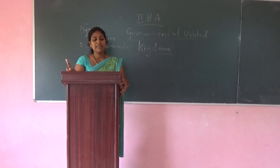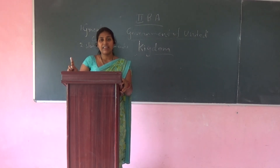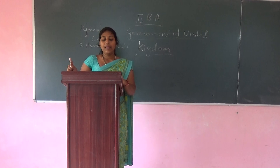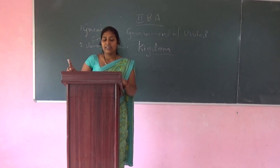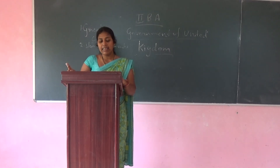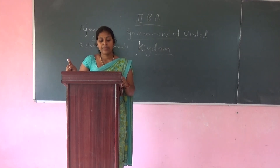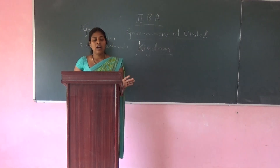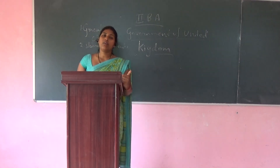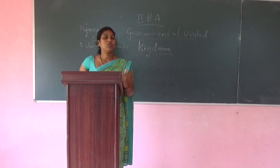The Habeas Corpus Act of 1679, the Public Order Act of 1936, and the Ministers of the Crown Act of 1937 are all rightly deemed to be major sources of the British Constitution.